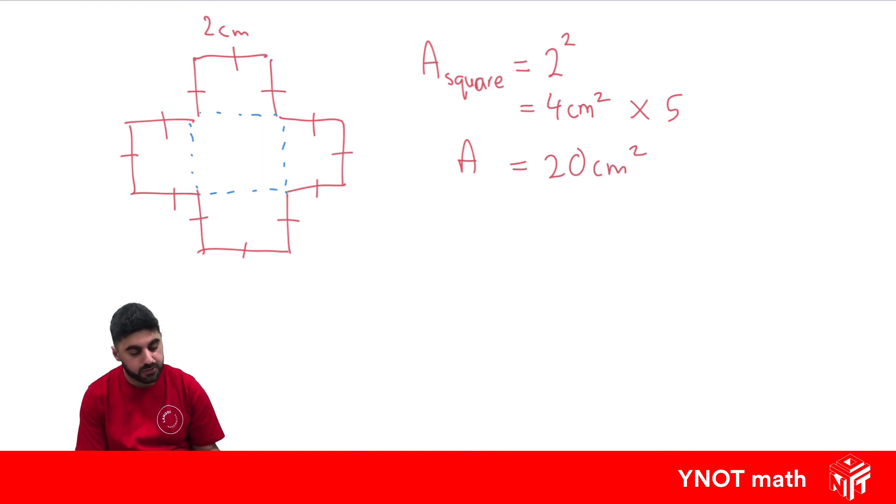Most of the time, there's more than one way to do it. We could have done this big rectangle plus two squares. We could have done this big rectangle plus two squares the other way. We could have even found the area of this big square minus the four gaps as well.